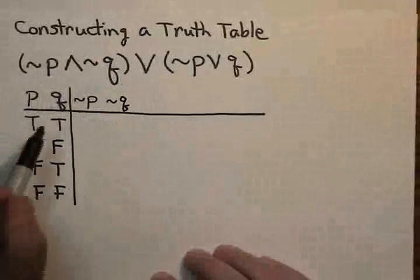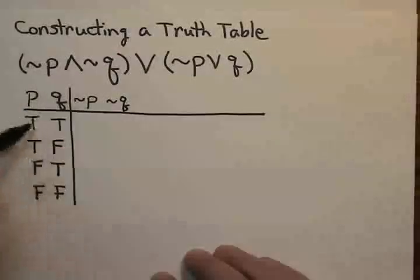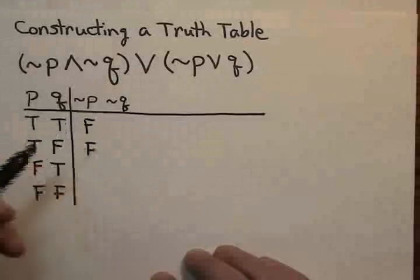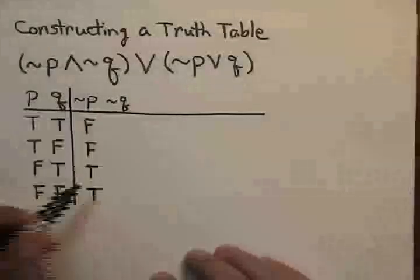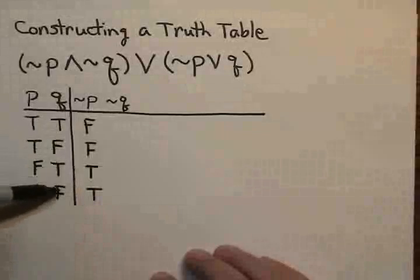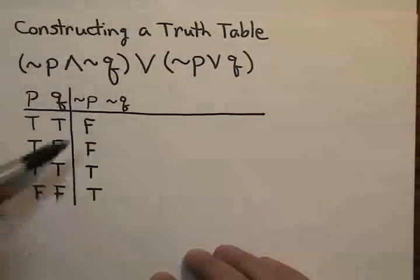A not P column is simply the opposite truth value of the P column. So instead of true, true, false, false, it will be false, false, true, true. Similarly, the not Q column will be the opposite truth values for the Q column. So it will be false, true, false, true.